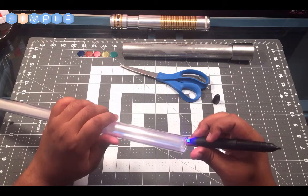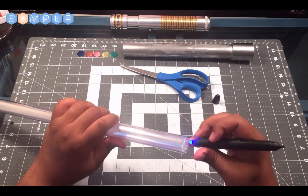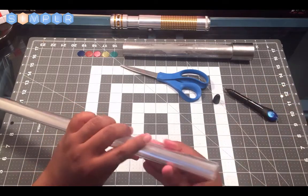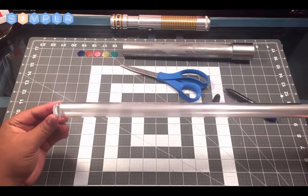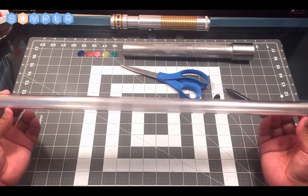What that does is it prevents our cellophane from sliding back out of the tube. And there you have it, your lightsaber blade.